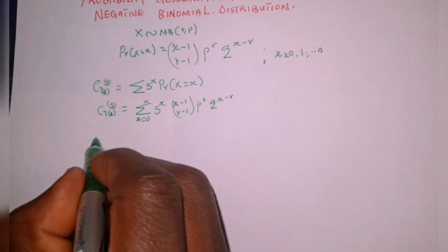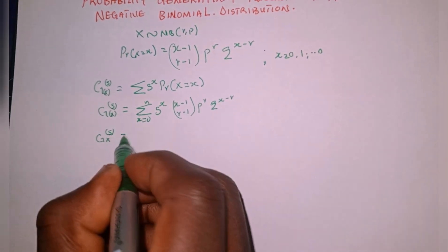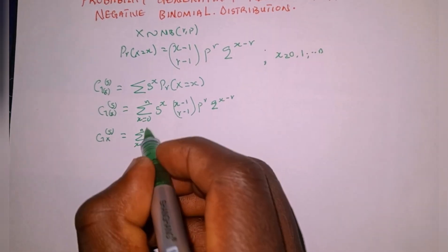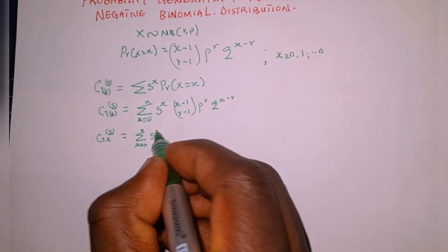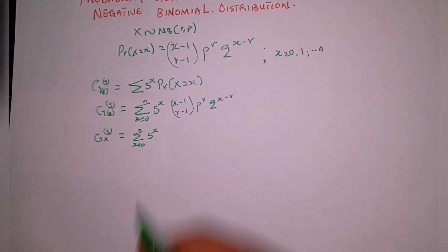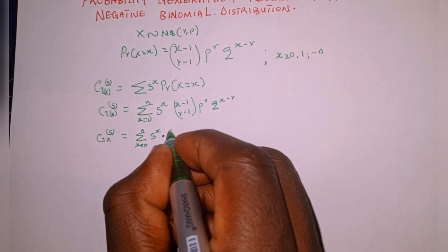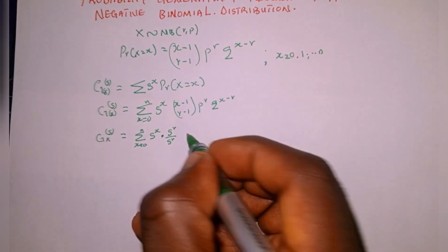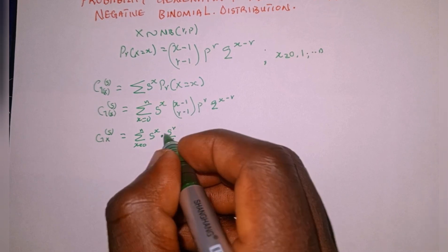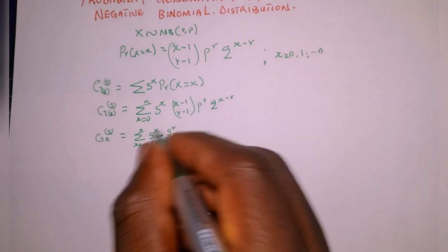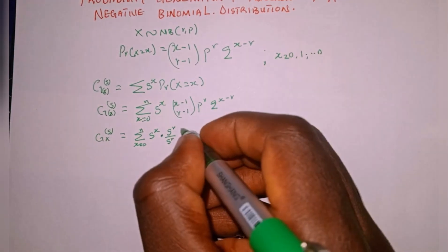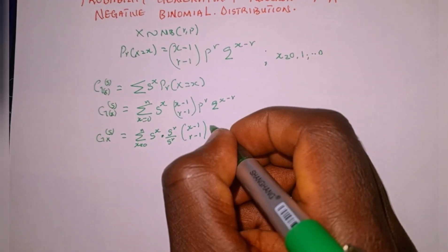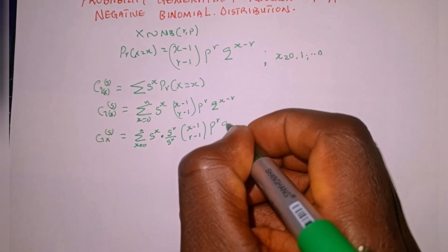Next, G sub X of s equals the summation as x goes from zero to n of s raised to the power of x. We're going to introduce a term: we multiply by x raised to the power of r over x raised to the power of r. Since dividing this by this gives one, nothing changes. Then we copy: x minus one combination r minus one, multiplied by p raised to the power of r, q raised to the power of x minus r.